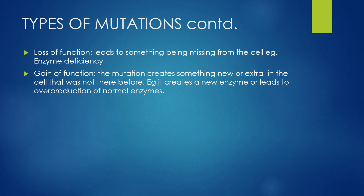The next type is a loss of function mutation — a mutation that leads to something being missing from the cell. An example is a mutation that causes an enzyme deficiency. The next type is a gain of function mutation, which creates something new or extra in the cell. An example is a mutation that causes a new enzyme to be produced or leads to overproduction of a normal enzyme. We would term that a gain of function mutation.